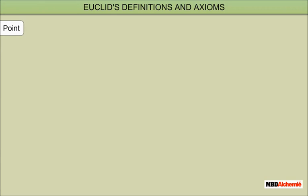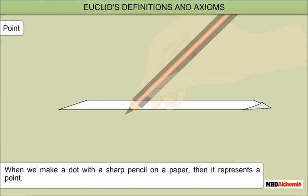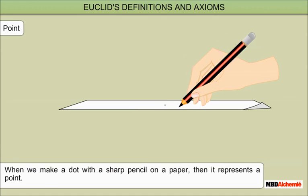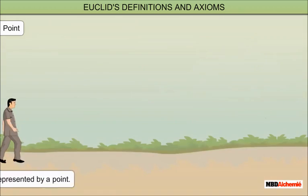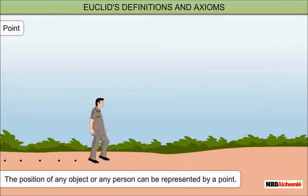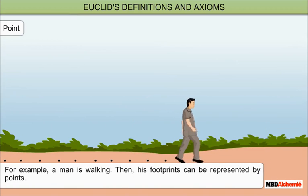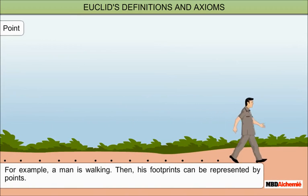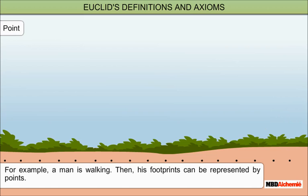Euclid's Definitions and Axioms. Point: When we make a dot with a sharp pencil on a paper, then it represents a point. The position of any object or any person can be represented by a point. For example, a man is walking — his footprints can be represented by points.